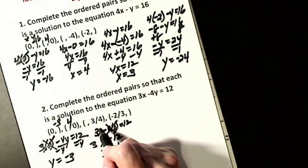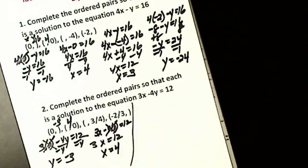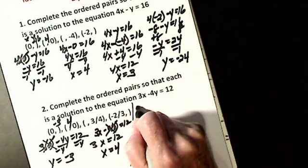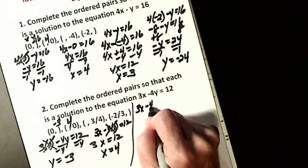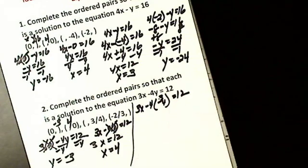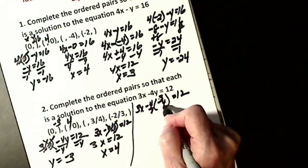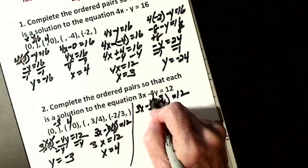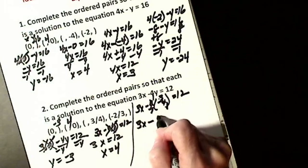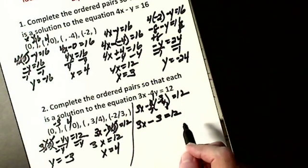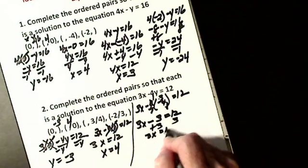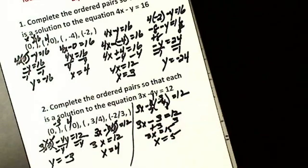You have to be able to deal with fractions. This says y is 3 fourths. So I have 3x minus 4 times 3 fourths equals 12. I cancel the 4s: I'm left with 3x minus 1 times 3 equals 12, which is 3x minus 3 equals 12. Add 3: 3x equals 15. X is going to be 5.